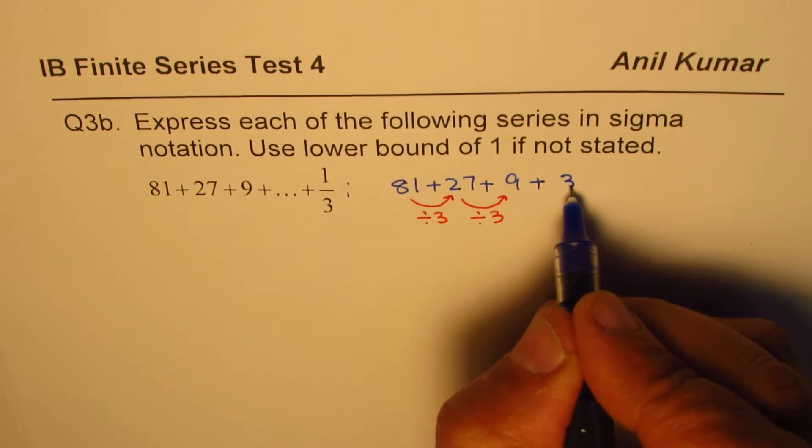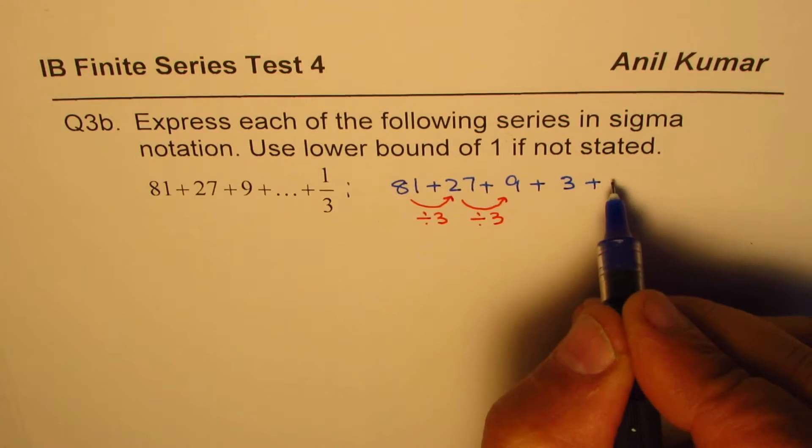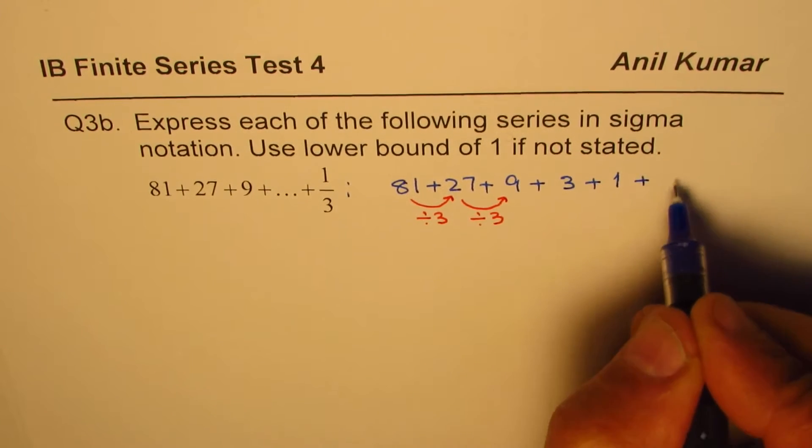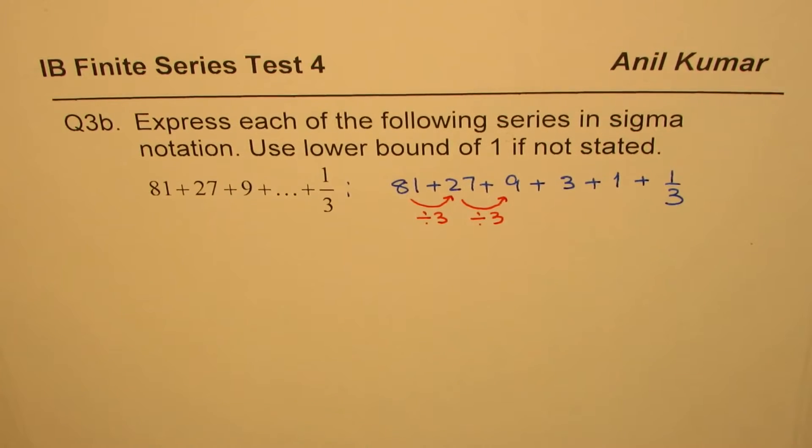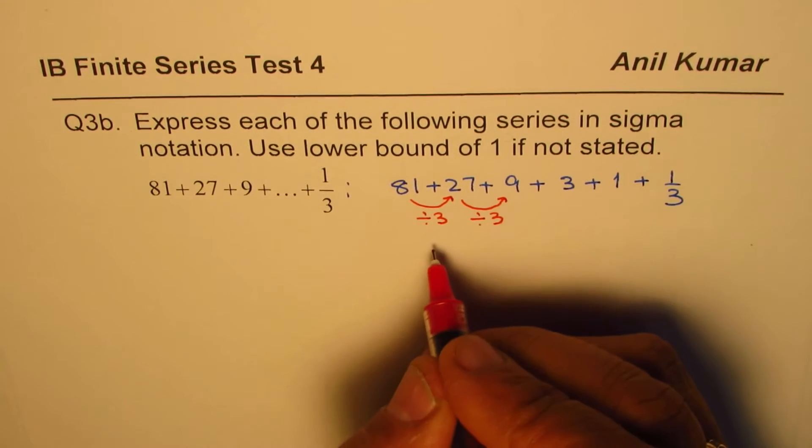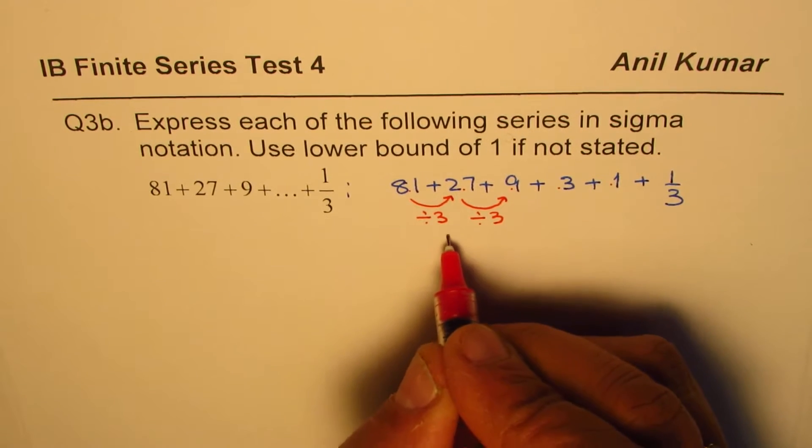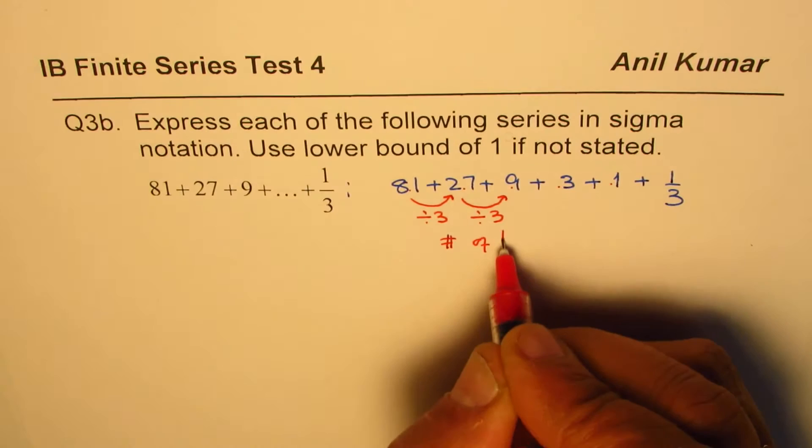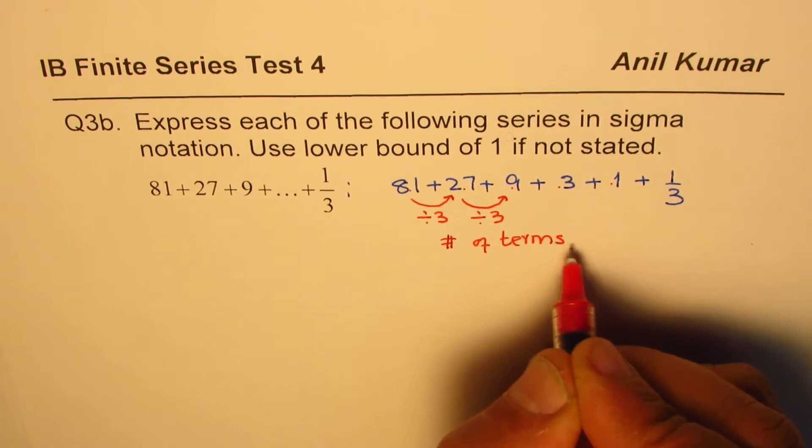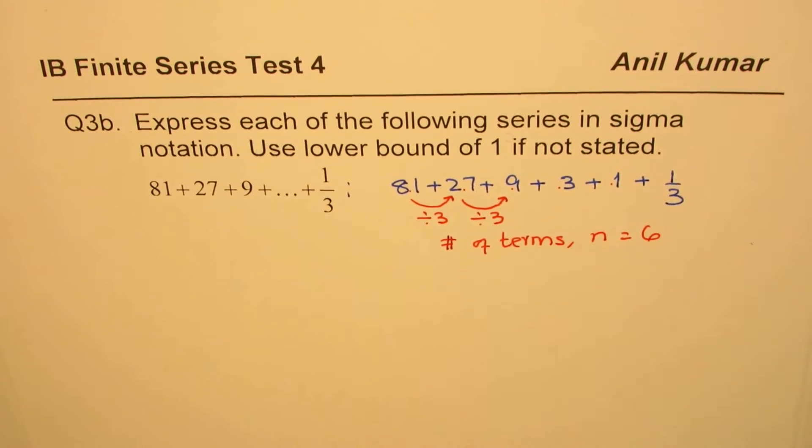So 9 divided by 3 is 3, and then we get 3 divided by 3 which is 1, and then we get 1 over 3. So that gives us number of items: 1, 2, 3, 4, 5, 6. So we say number of terms, n, is equal to 6 for us.